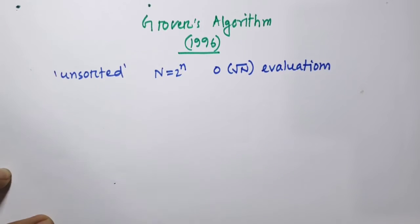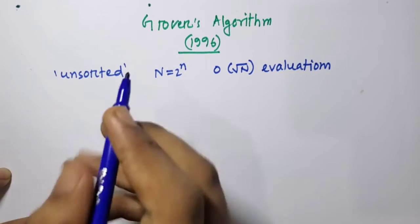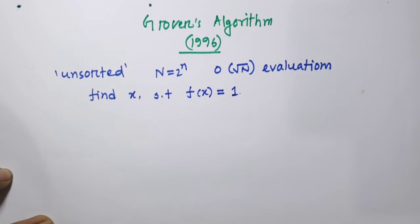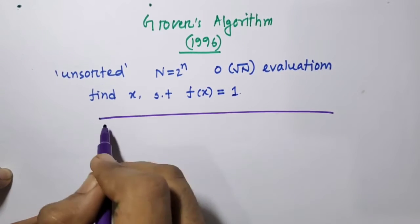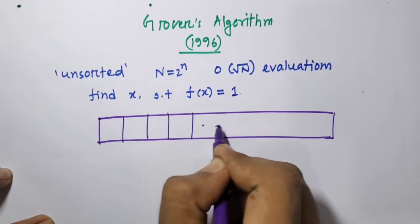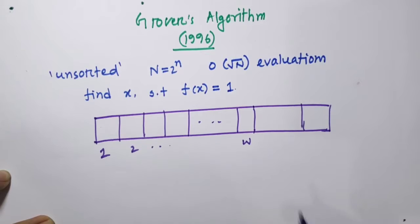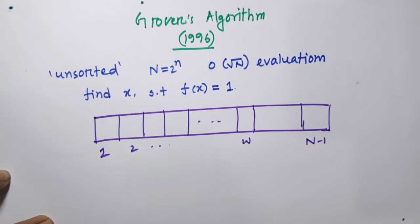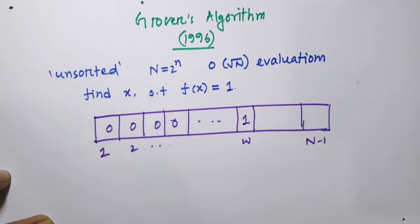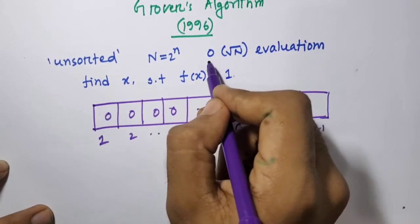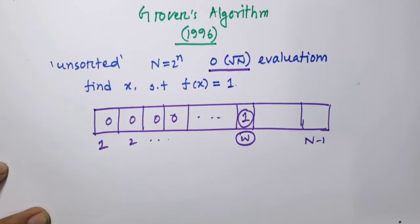In the case of unsorted search in an unsorted database, we can define it as: find x such that f of x equals 1. For example, suppose we have an unsorted database where the elements are indexed 1, 2, up to n minus 1, and w is our expected marked element. We have 0 at all other points and 1 at this index. We need to find this w, and the claim is we can find it using Grover's algorithm within square root of n evaluations.